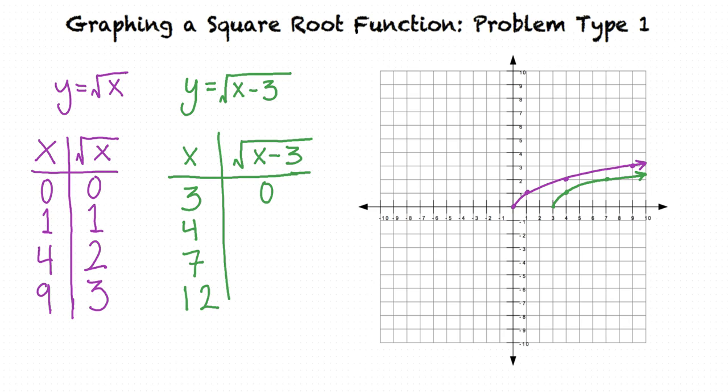If we use 4 for x, 4 minus 3 is 1, the square root of 1 is 1. If we plug in 7 for x, 7 minus 3 is 4, and the square root of 4 is 2. And if we choose 12 for x, 12 minus 3 is 9, the square root of 9 is 3.